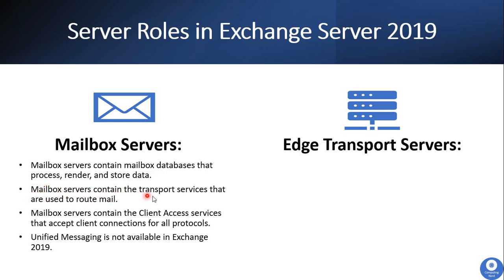The Mailbox Server contains the transport services used to route email. All transport services are hosted on the Mailbox Server role to route your inbound and outbound emails. The Mailbox Server also contains the client access services that accept client connections for all protocols, providing connectivity for Outlook, Outlook on the Web (OWA), and ActiveSync. All connection points and virtual directory certificates are configured on this server role.